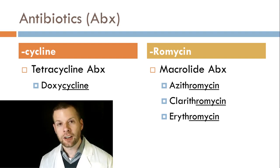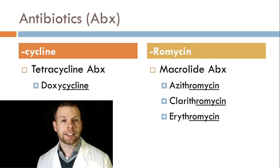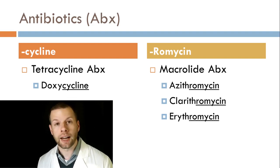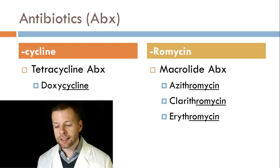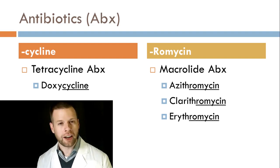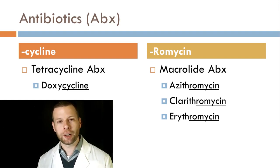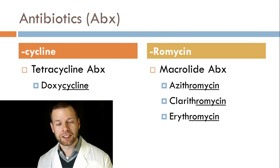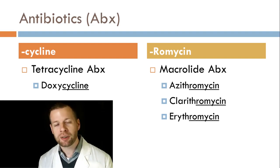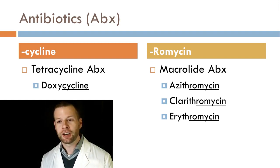Drugs that end in '-romycin' — r-o-m-y-c-i-n — are macrolides. Macrolide medications include azithromycin, clarithromycin, and erythromycin. Azithromycin is commonly known by the brand name Z-pack — you've probably had that before: two the first day, one each additional day for the next few days.